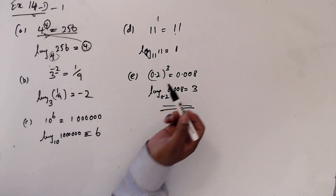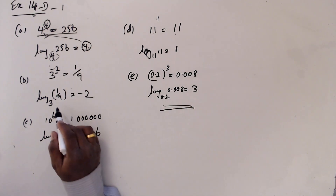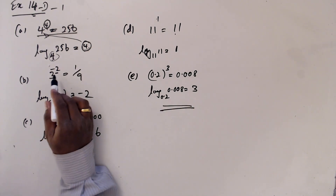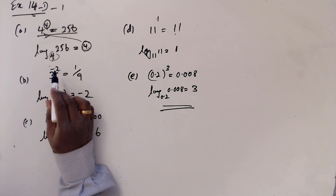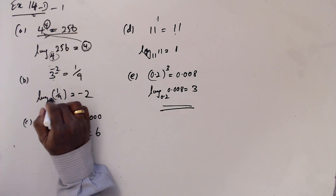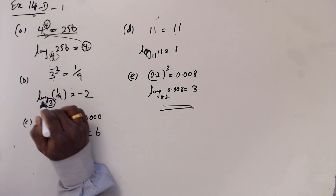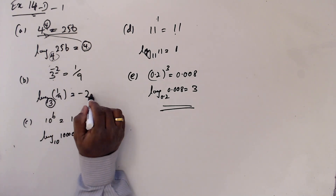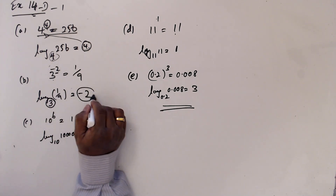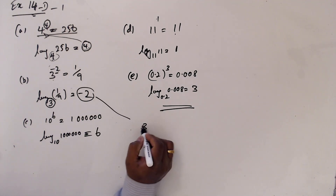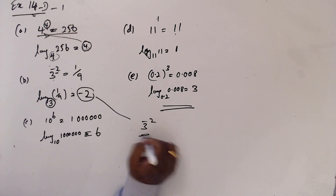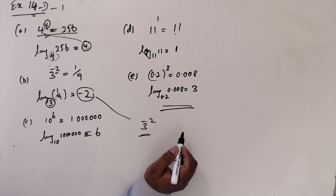Now, we know that — where is the power? This is the base and this is the power. Base is with the logarithm and power is outside. Then we can simply write 3 to the power minus 2.